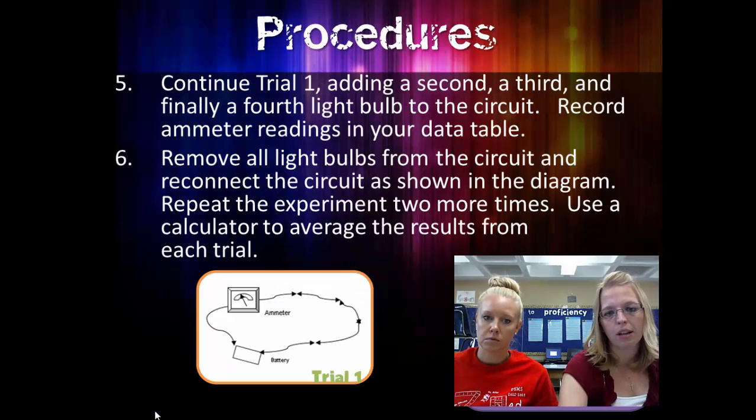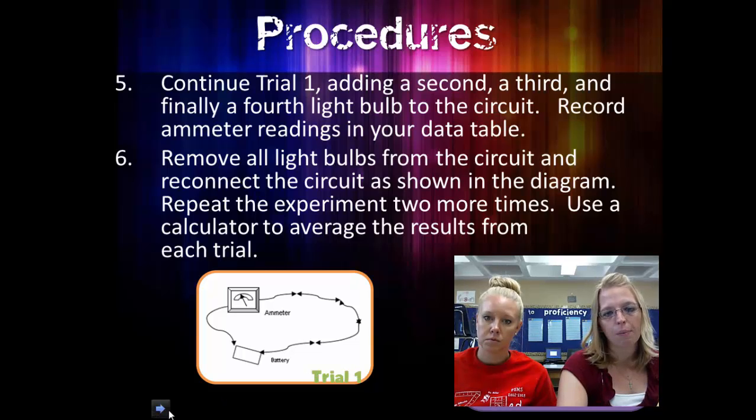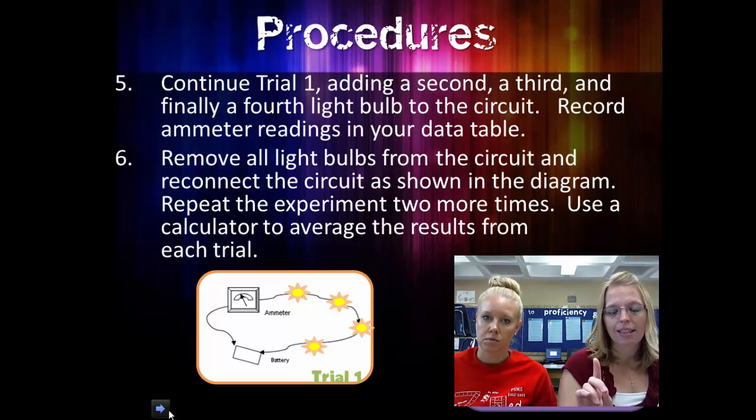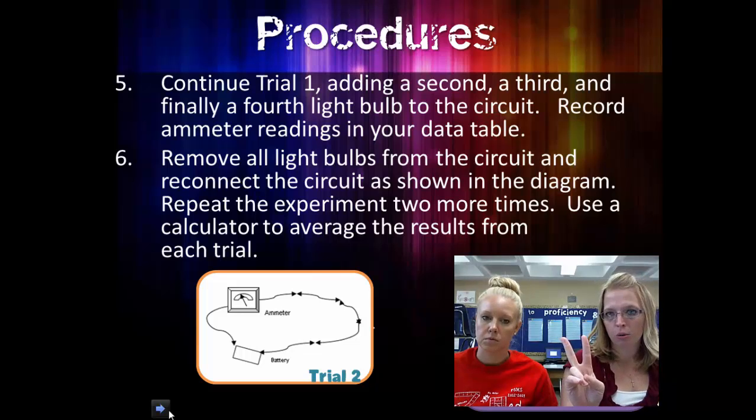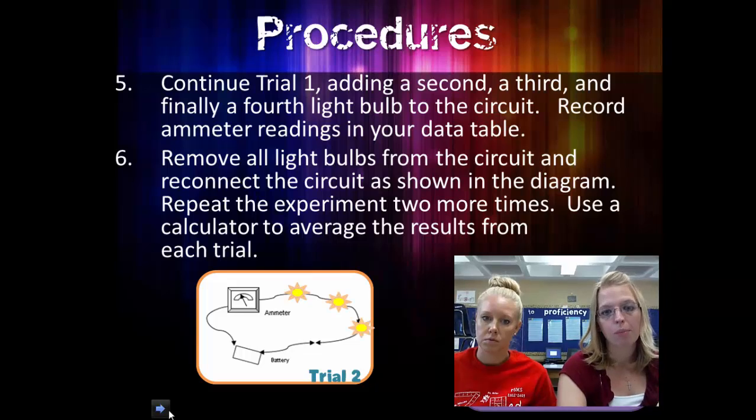And then you continue on. For trial one, see, trial one right here. I'm going to add no bulbs, then one bulb, two bulb, three bulb, four bulb. Then I take them all out. Trial two. Zero bulbs. Trial two. One bulb, two bulb, three bulb, four bulb.